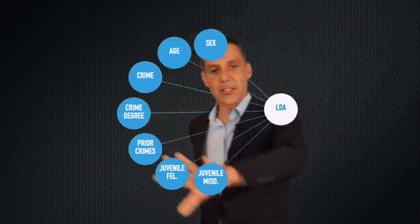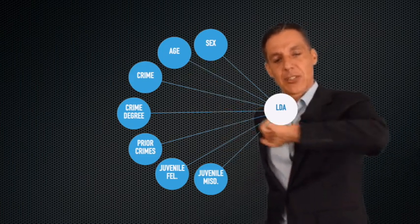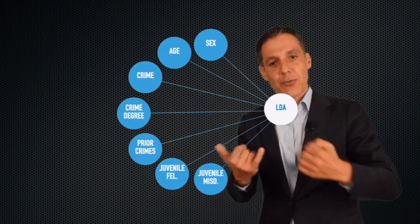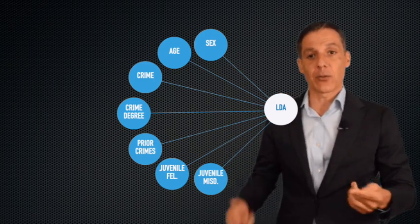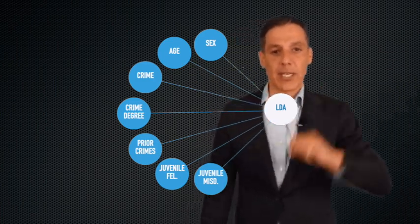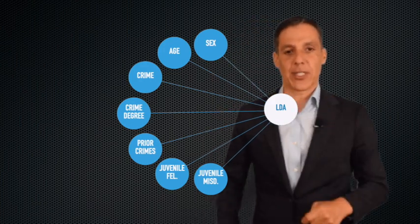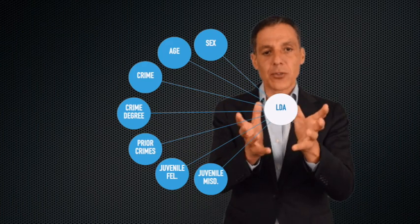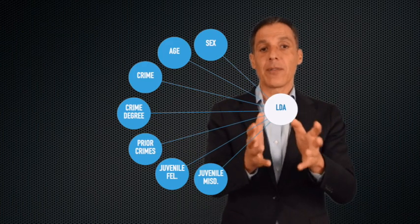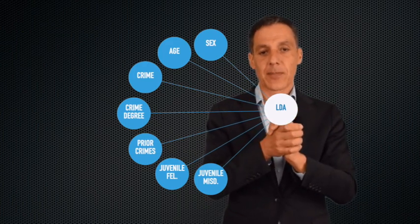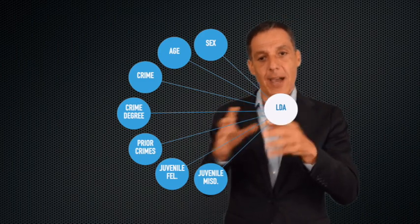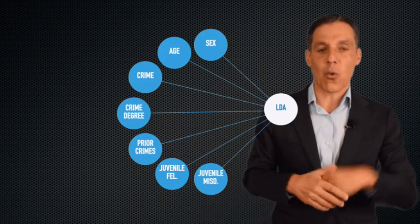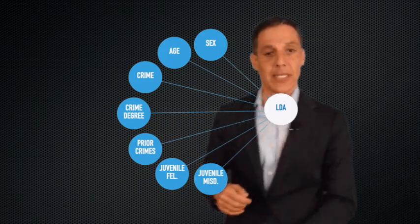So we looked at all possible subsets of these seven pieces of information — from the full set down to all subsets of size six, five, four, three, two, one. A classifier with one piece would only take the age and try to make a prediction, or only take the sex and try to make a prediction. Then we asked: what's the best you can do across all of those classifiers in terms of overall accuracy? The hope is that by looking at that classifier and what information it latches onto, we can get answers to the questions that have been plaguing us from the beginning of this talk.